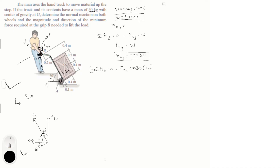Why 1.3? Because it's the distance from here all the way to here, given by 0.4 plus 0.5 plus 0.4, that's 1.3. Now this force also has a projection going straight up generating a moment equal to F_Bx times cosine 60, times the distance 0.1. Why 0.1? Because that's the distance from here to here — in other words, 0.2 minus 0.1. And it is negative because it's trying to turn the whole unit clockwise.